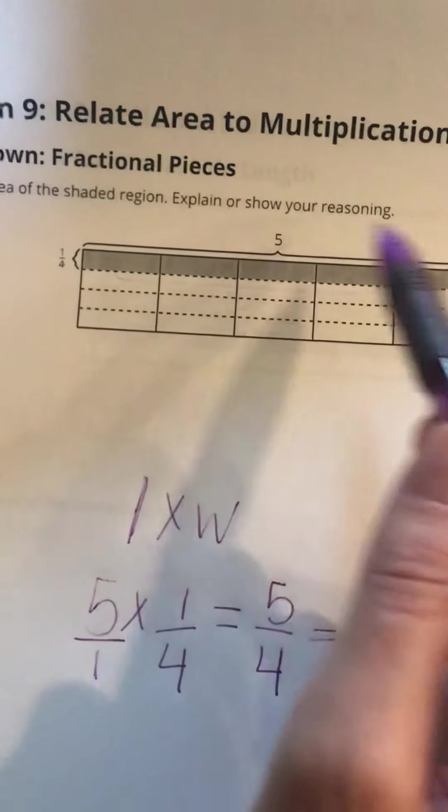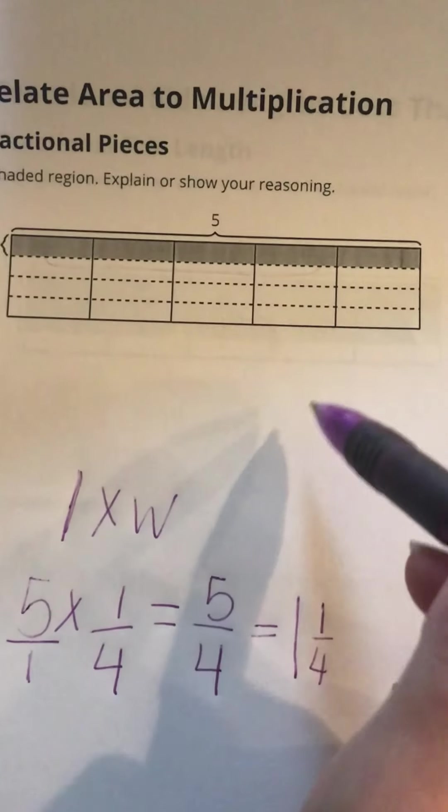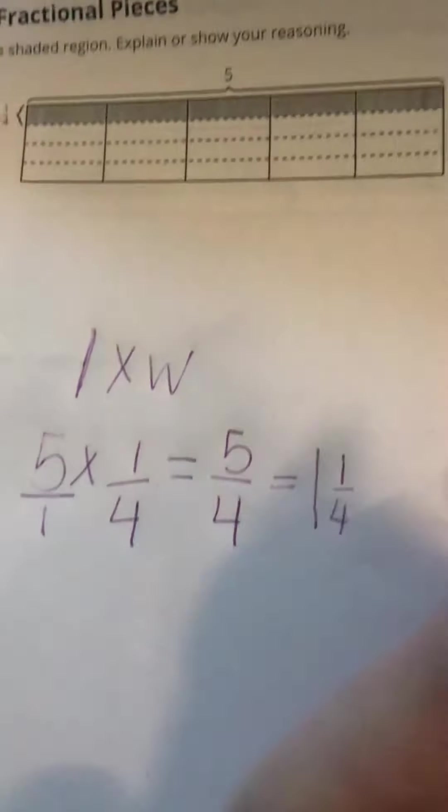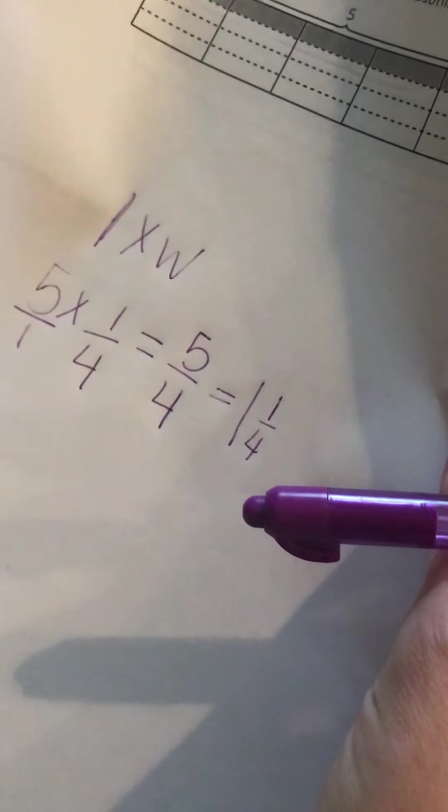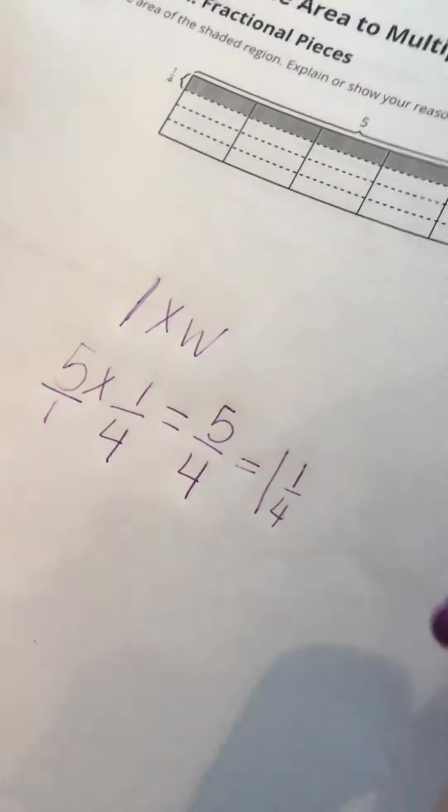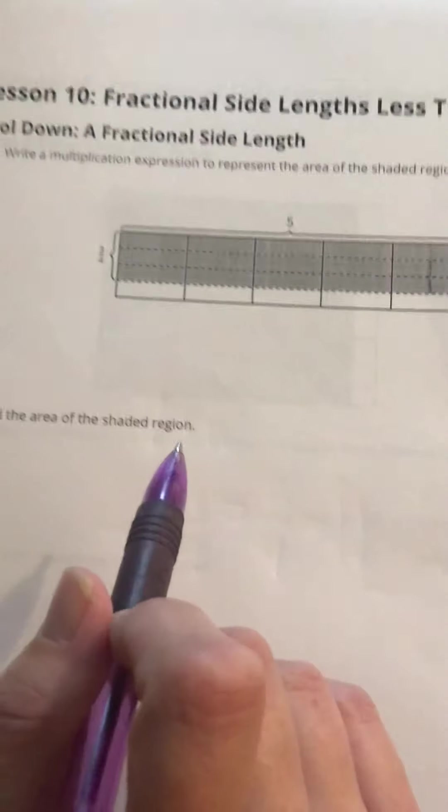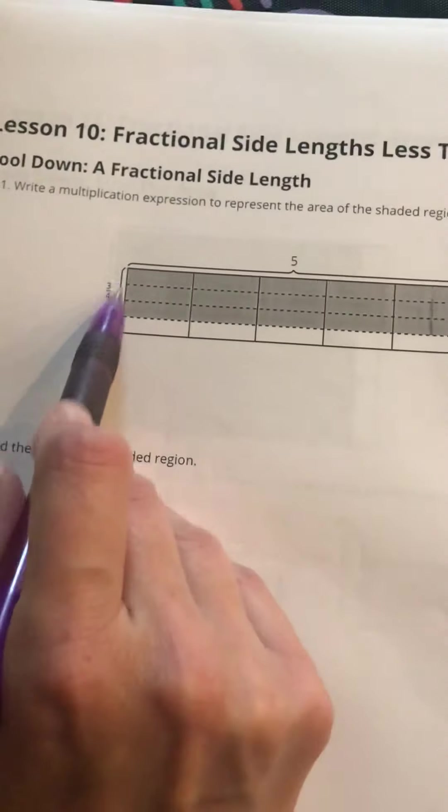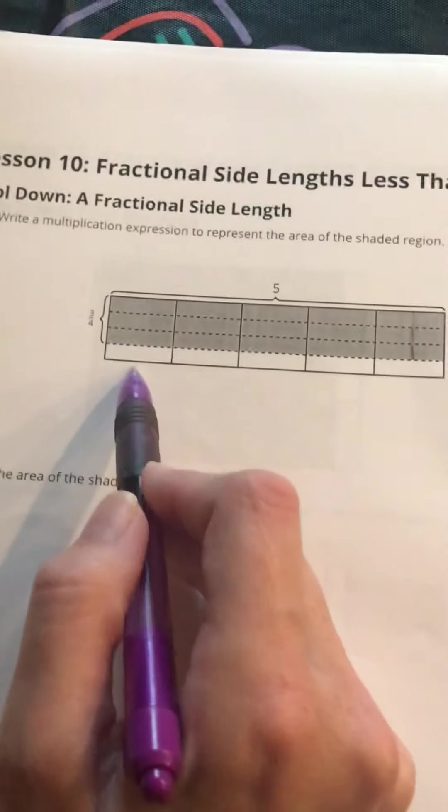Now on lesson 10 we had a similar problem. It says write a multiplication expression to represent the area of the shaded region. So now I've got 3/4. I can see that there's three out of the four pieces shaded, and we've also got a length of 5 again.